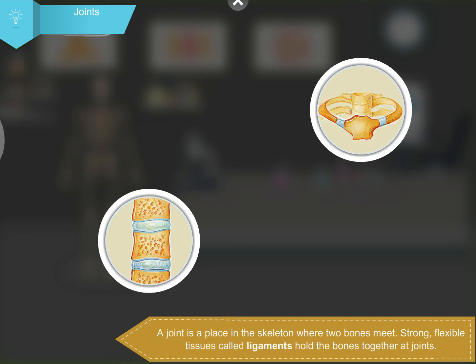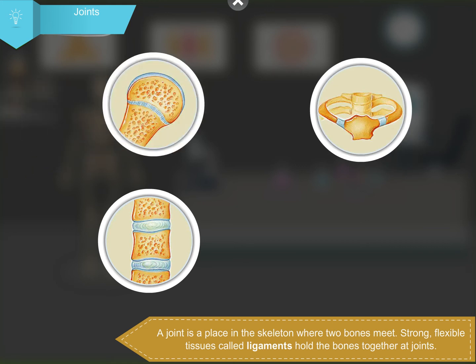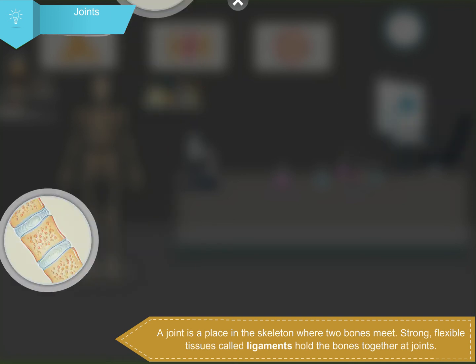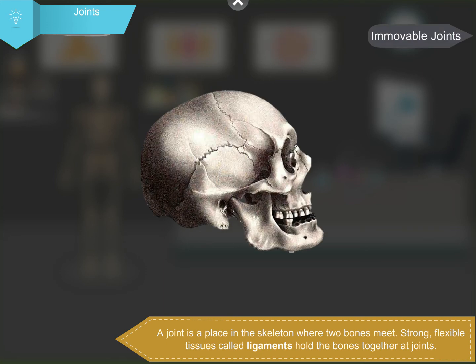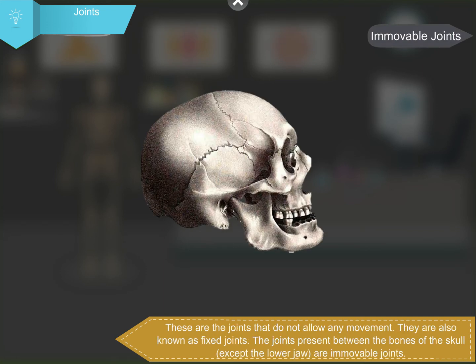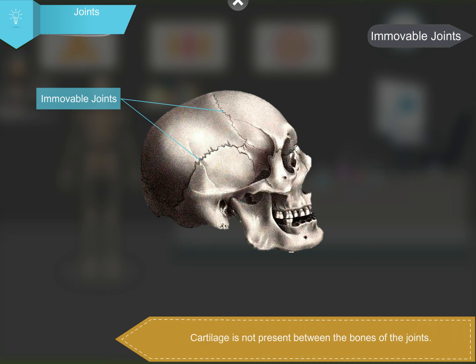A joint is a place in the skeleton where two bones meet. Strong, flexible tissues called ligaments hold the bones together at joints. Immovable joints are joints that do not allow any movement. They are also known as fixed joints. The joints present between the bones of the skull, except the lower jaw, are immovable joints. Cartilage is not present between the bones of these joints.